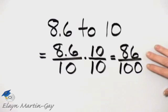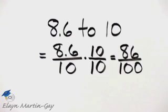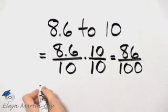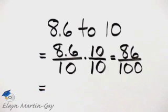Now notice this is still not in simplest form. 86 and 100, I know there's at least a common factor of 2.